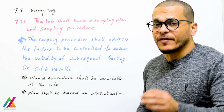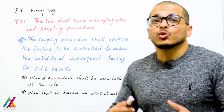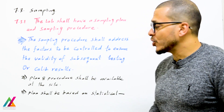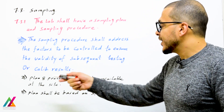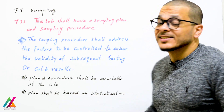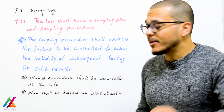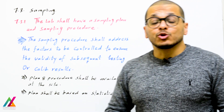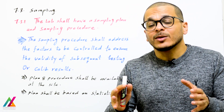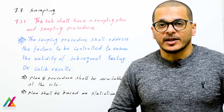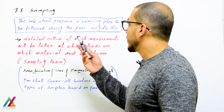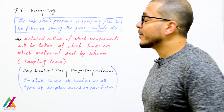The sampling procedure shall address all factors to be controlled to ensure the validity of subsequent testing or calibration results. The sampling plan shall be based on statistical methods, and the plan and procedure shall be available at the site.